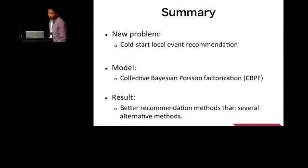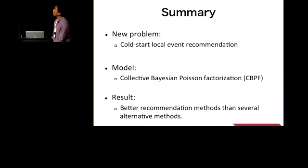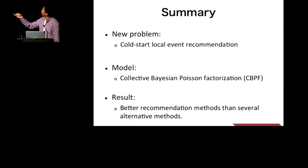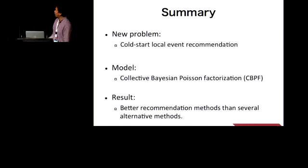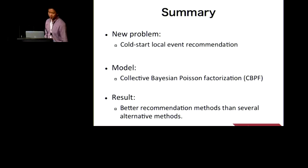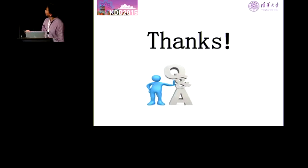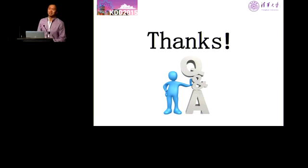Finally, we can conclude our work. We propose a new problem — Cold-Start Local Event Recommendation. For this task, we propose Collective Bayesian Poisson Factorization, that is CBPF. And in the result part, we find that we can get better recommendation results than several other baseline methods. That's the end of my talk. Thank you all for listening to my work.